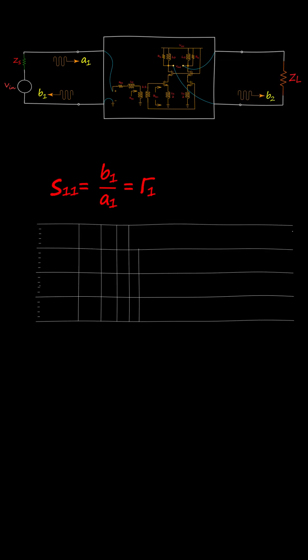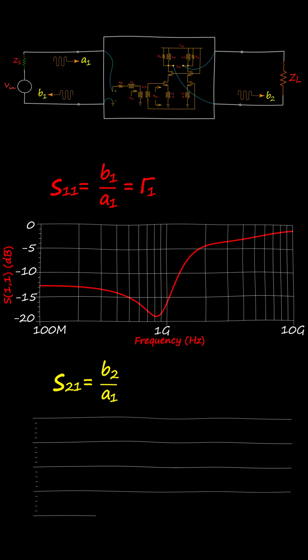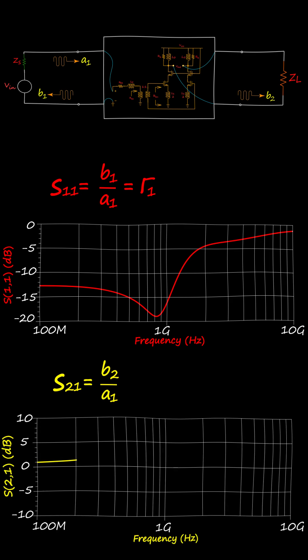The ratio of B1 over A1 is called S11, the reflection coefficient at port 1. It shows how much of the incident wave is going to be reflected from port 1. The ratio of B2 over A1 is called S21. It represents the forward gain of the network.